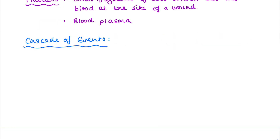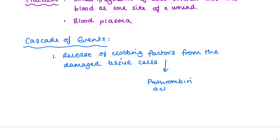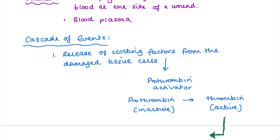So what are the cascade of events which occur during the clotting process? Well first of all we need the release of clotting factors from the damaged tissue cells. One of these clotting factors includes prothrombin activator, which as the name suggests converts the inactive form of prothrombin into its active form, which is thrombin. That thrombin then has a very important role in activating fibrinogen, which is a soluble protein, into fibrin, which is insoluble.